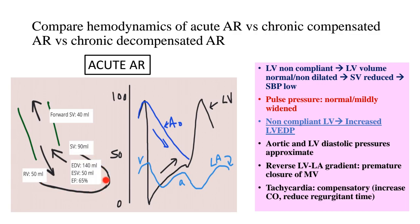With a normal-sized LV in acute AR, using example numbers: the end-diastolic volume is normal at 140 ml and end-systolic volume is 50 ml, giving a stroke volume of 90 ml with a normal ejection fraction. However, 50 ml of that is regurgitating back due to acute AR, so the net forward stroke volume is extremely low at only 40 ml. As a result, the systolic blood pressure is low.